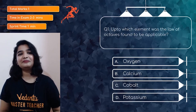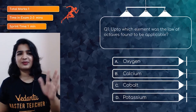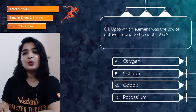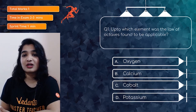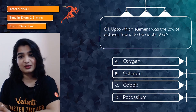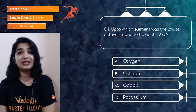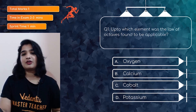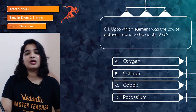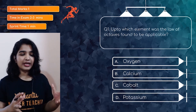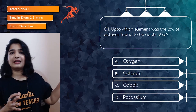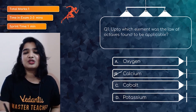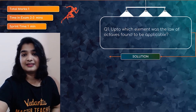Here is the first question — it's one mark and we'll try to solve it within 60 seconds. Up to which element was the Law of Octaves found to be applicable? This is one of the limitations of Newland's Law of Octaves. The options are oxygen, calcium, cobalt, and potassium. The Law of Octaves worked only for the lighter elements, that is up to calcium, so option B is the right answer.